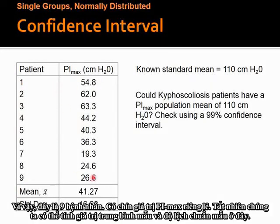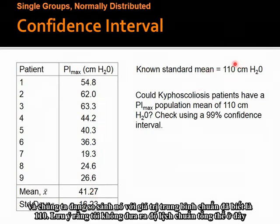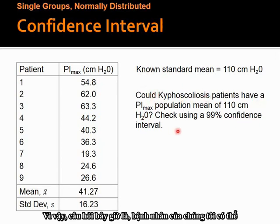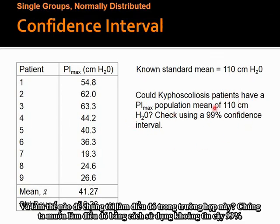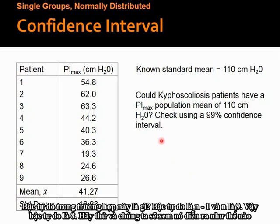Here are our nine patients with their nine individual PI max values. We calculate a sample mean and sample standard deviation and compare to a known standard mean of 110. Notice the population standard deviation is not given, so we use the sample standard deviation as an estimate. The question is: could our patients actually have a similar population mean of 110? We'll do this using a 99% confidence interval with the T-distribution. Degrees of freedom is n minus 1, n is nine, so degrees of freedom is 8.